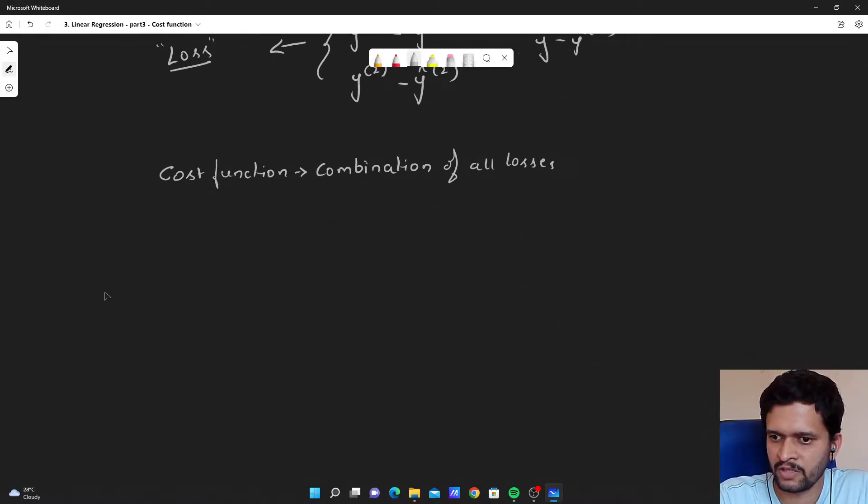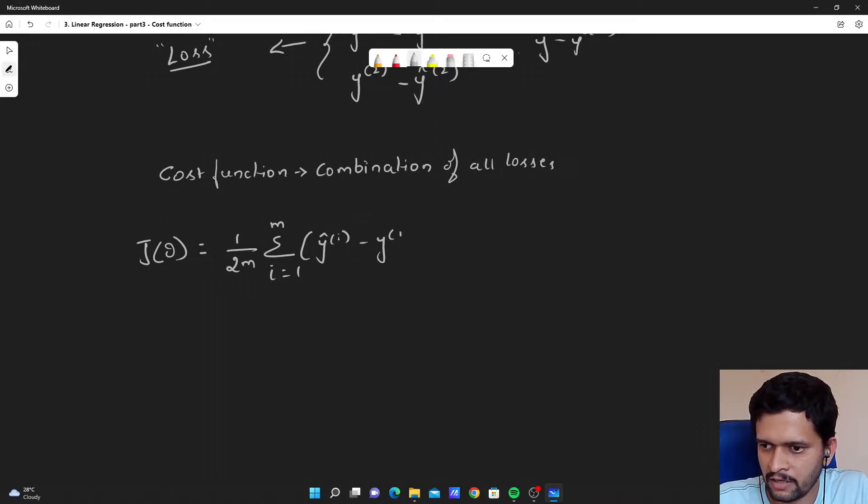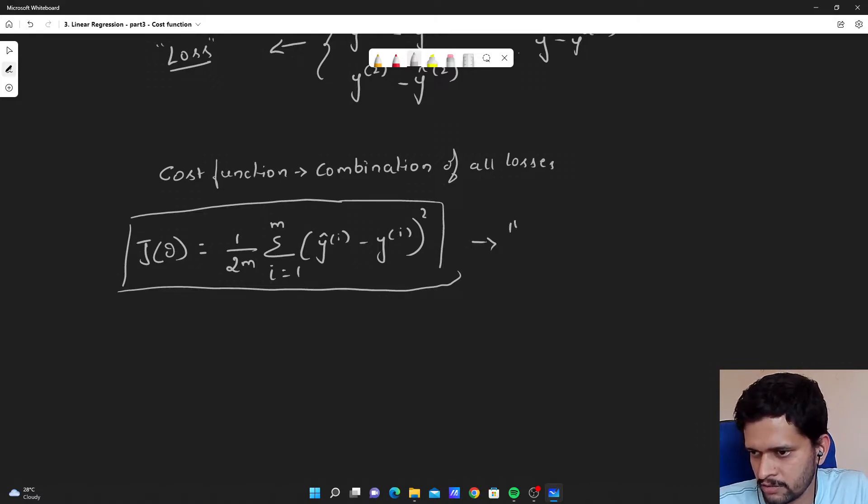How do we denote the cost function? We denote cost function as j, a function of theta, is equal to 1 by 2m and summation of i is equal to 1 to m. The difference between y hat of i minus y i, square. This is our cost function for linear regression. This is also called as mean square error.